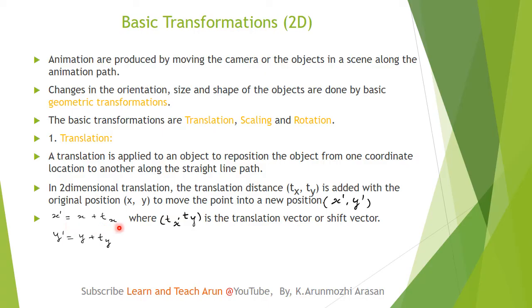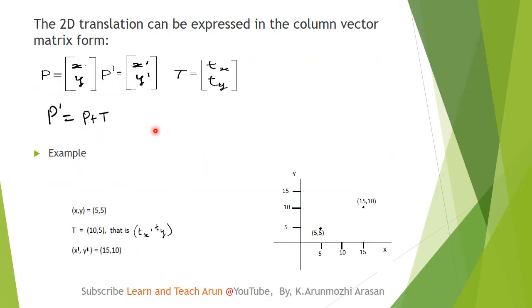The translation formula is: x dash equals x plus tx, y dash equals y plus ty. Here x, y is the original position, tx and ty is the translation distance, and x dash, y dash is the new translated position. In two-dimensional translation, we use matrix representation: p is the original position, p dash is the translated position, and t is the translation matrix, so p dash equals p plus t.